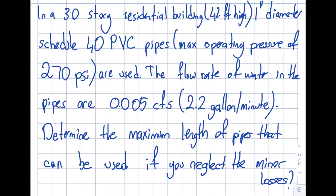And let's assume that the flow rate of water in the pipes are 0.005 feet cube per second, CFS is feet cube per second. I also converted for convenience, this will be 2.2 gallon per minute. Fairly standard.